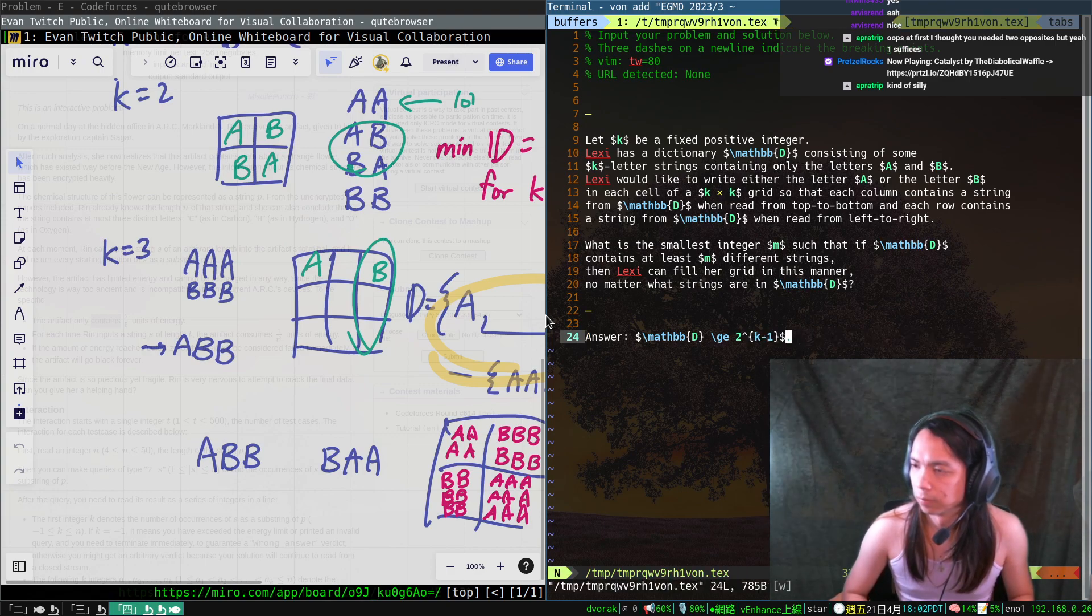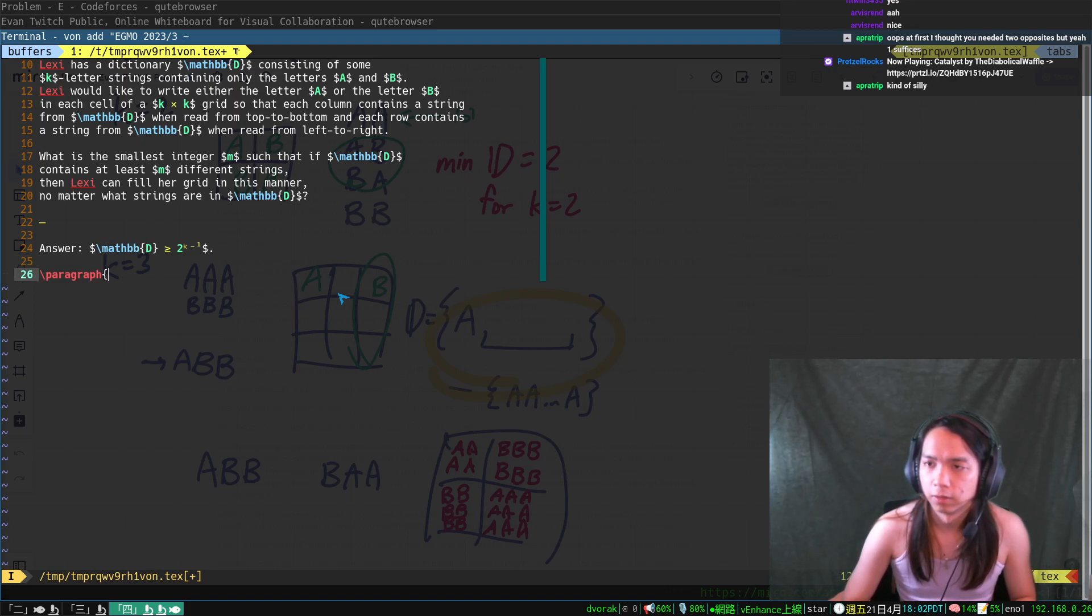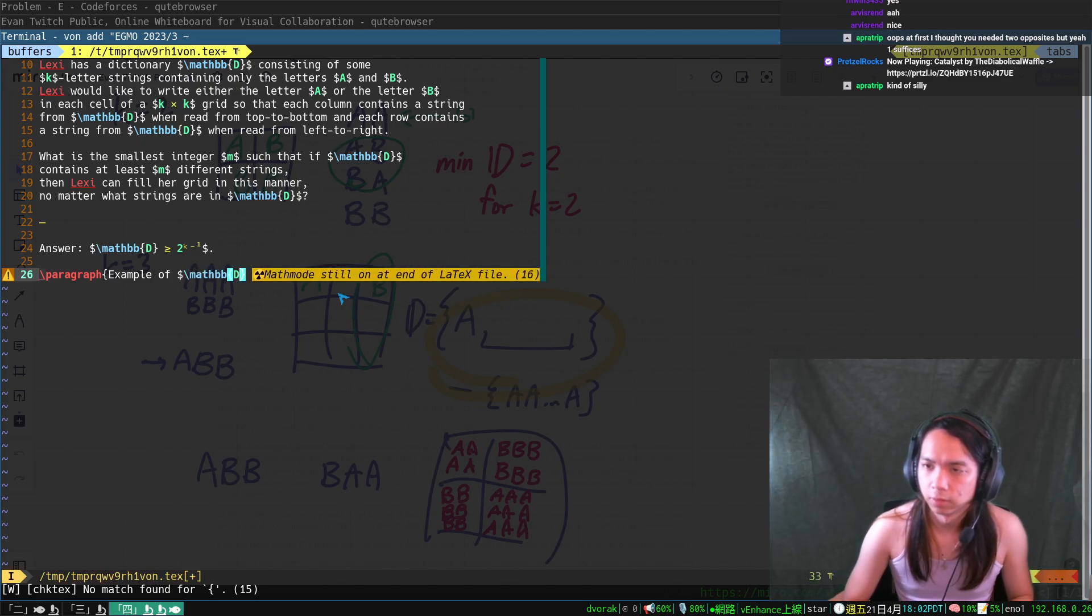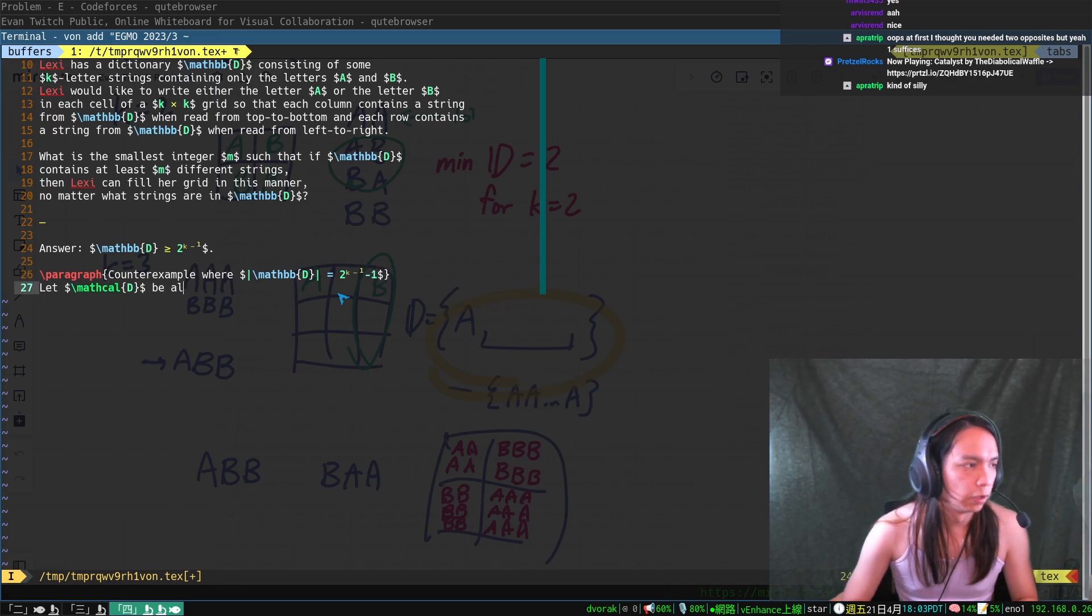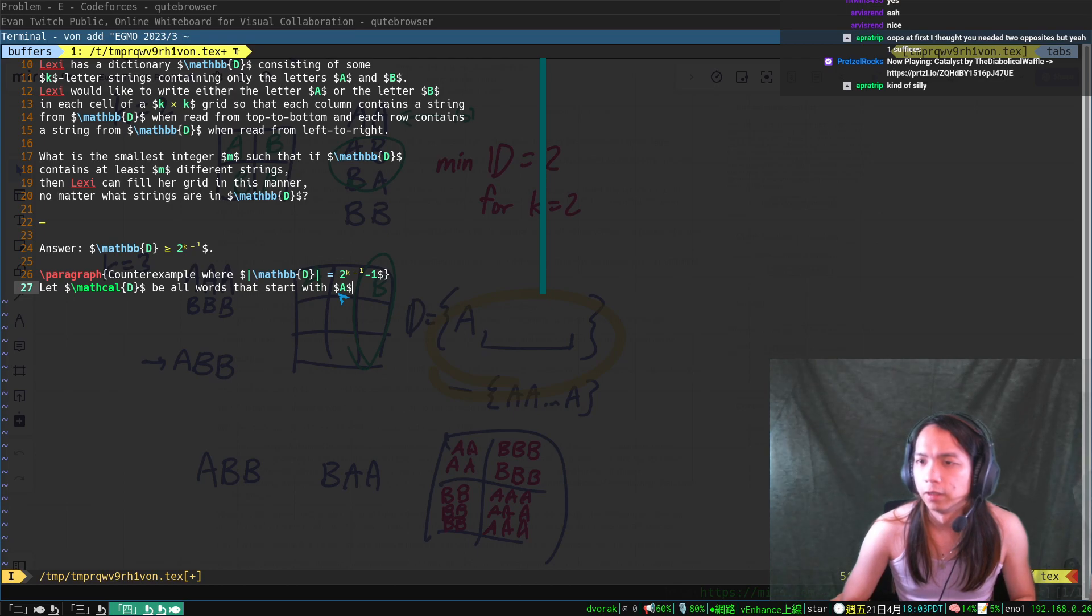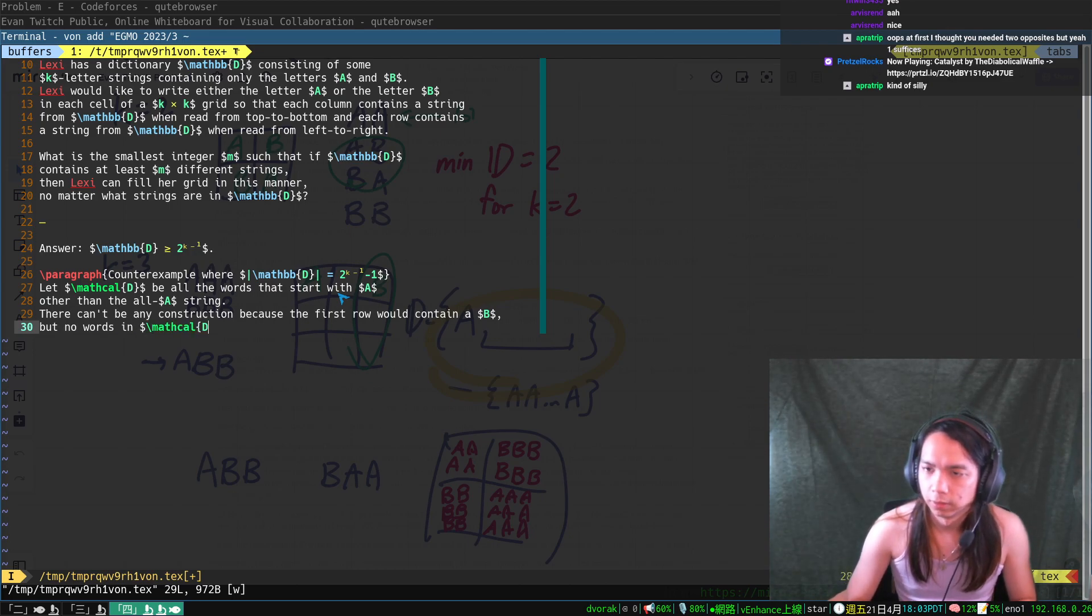All right, fine. So, answer—the all words that start with A, other than the all-A string. There can't be any construction because the first row would contain a B, but no words start with B.